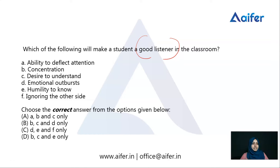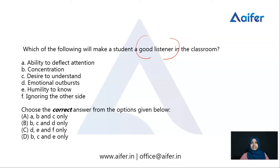Let's move to the options. Option A: Ability to deflect attention. What is meant by deflect? Deflect means being distracted. A distracted attention cannot be considered a feature contributing to being a good listener — in fact it negatively influences listening capacity. So ability to deflect attention is a negative term not related to a good listener, and we can exclude option A.